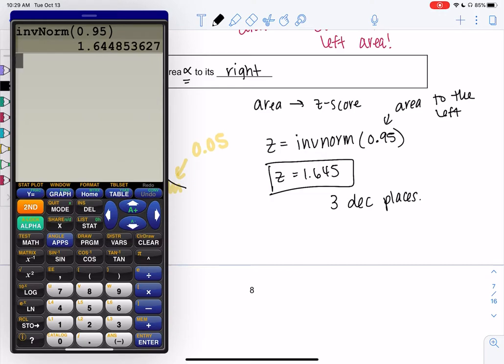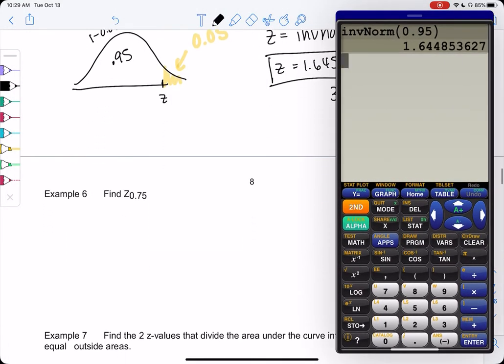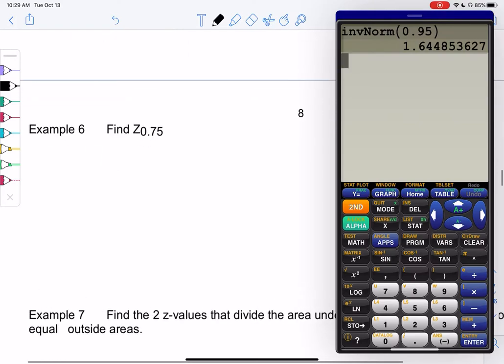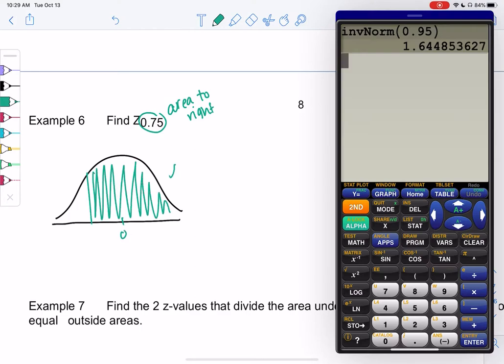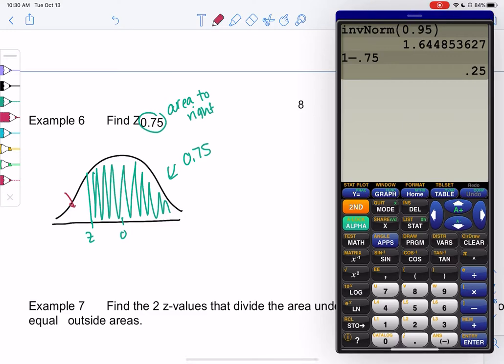Let's try another one. Example 6: Find z subscript 0.75, so 75% to the right. I'm going to shade more than half. So 0 would be 50, so it's going to be farther. I'll just approximate where 75 is.